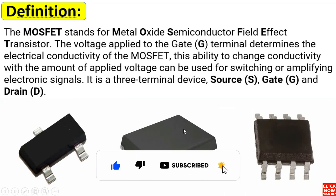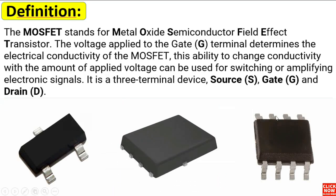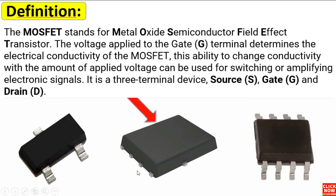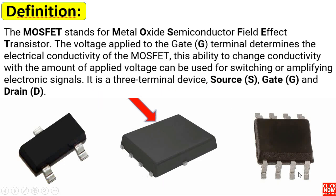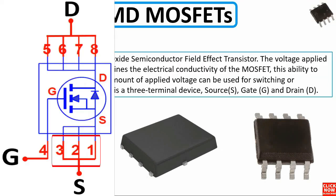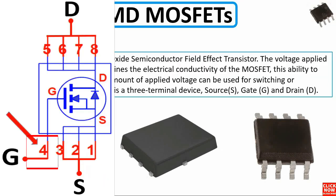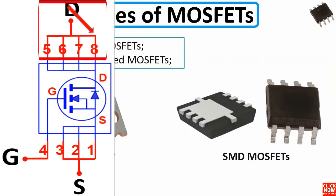As you can see here, we have three types of MOSFETs. This is an 8-pin MOSFET. Here also we have an 8-pin MOSFET, but this one is called a flat MOSFET. The MOSFETs contain three pins for source, one pin for gate, and four pins for drain.